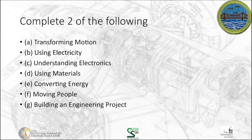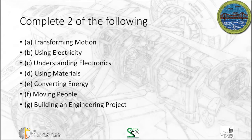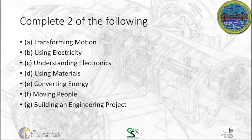We've got seven options available here, and two of them are the ones you have to choose to do on your own and then document in the workbook. The options we have are laid out here: transforming motion, using electricity, understanding electronics, using materials, converting energy, moving people, or building an engineering project. Let's dig into these one at a time and talk about what you need to do if you choose that option. Again, you can choose any two of these, but you must choose two.